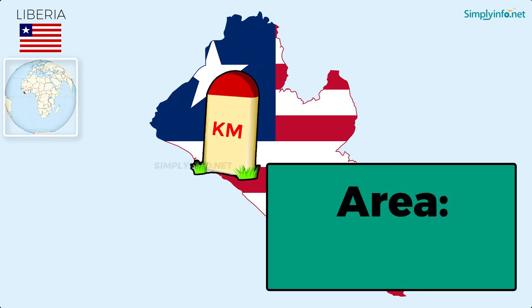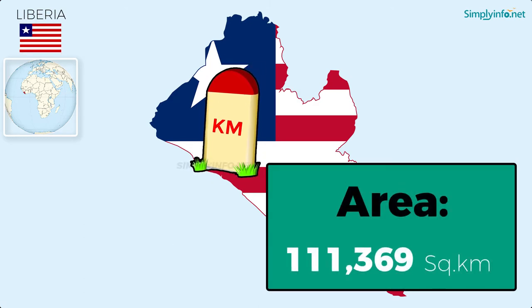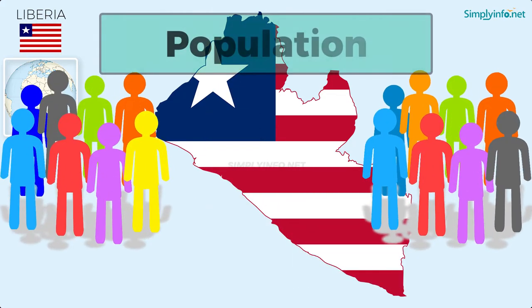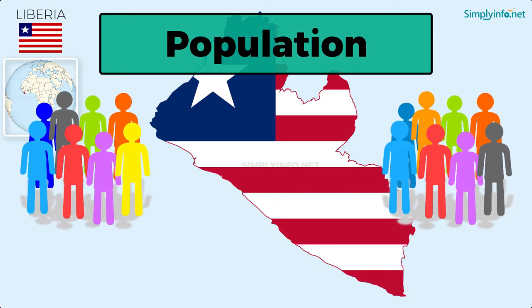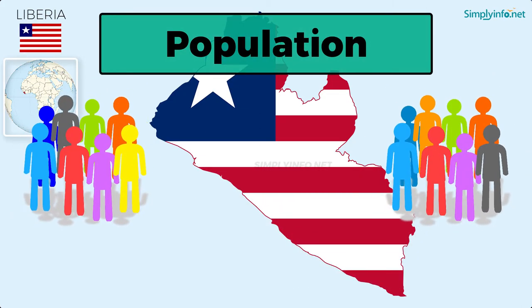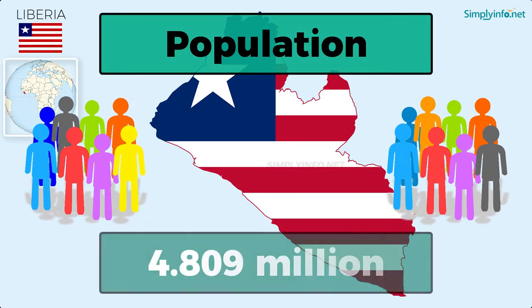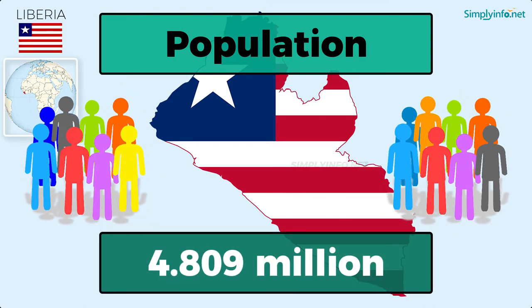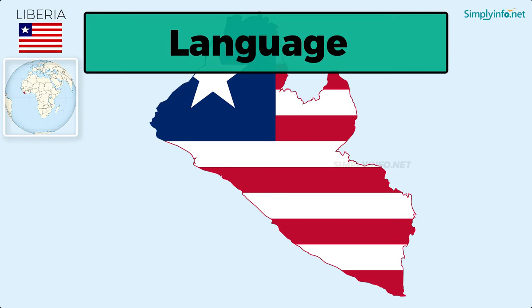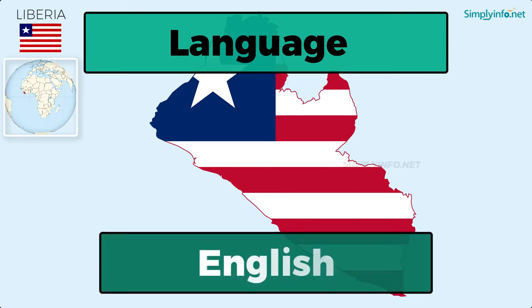Area: 111,369 square kilometers. Population as of 2018: 4.809 million. Language: English.